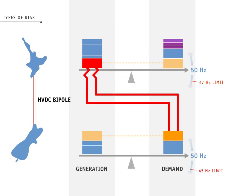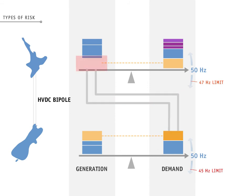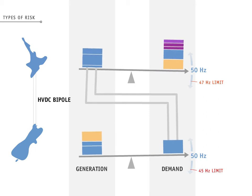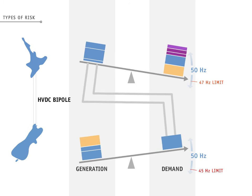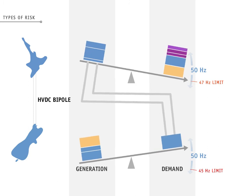Now we've gone over the concepts, let's look at a demonstration of a bipole trip, a DC-ECE. As soon as the bipole trips, note how there is too much generation in the South Island, and an excess amount of load in the North Island. The North Island and South Island power systems are separated, and go out of balance with each other.